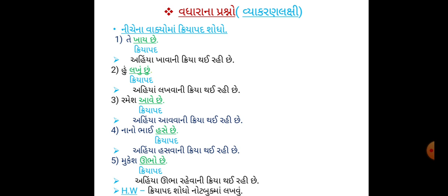ત્યાર પછી: 'નાનો ભાઈ હસે છે.' - 'હસે છે' એ ક્રિયાપદ છે, હસવાની ક્રિયા. ત્યાર પછી: 'મુકેશ ઊભો છે.' - 'ઊભો છે' એ ક્રિયાપદ છે, ઊભા રહેવાની ક્રિયા. વિદ્યાર્થી મિત્રો, હોમવર્કમાં તમારે ક્રિયાપદ શોધો - એ નોટબુકમાં લખવાનું રહેશે.